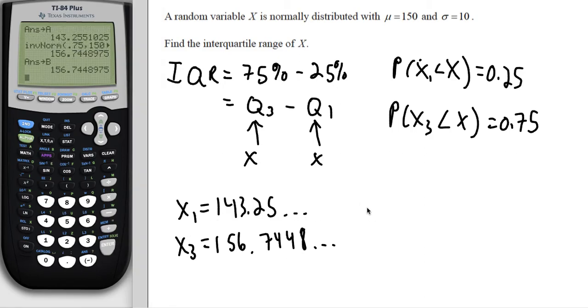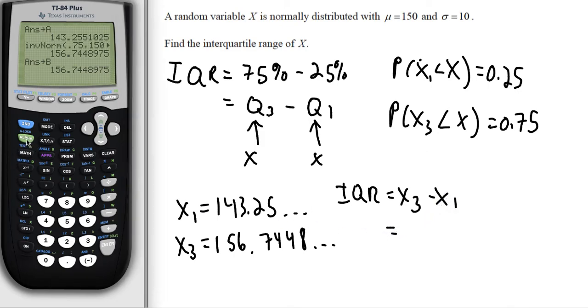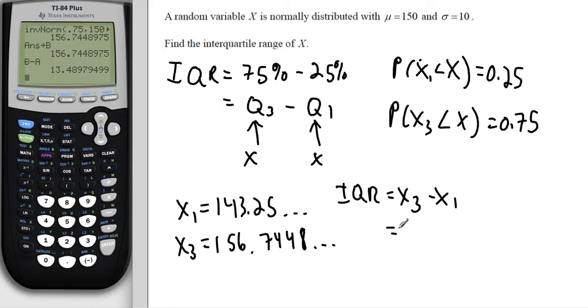So now the interquartile range, I just need to take x3 minus x1. So on the calculator, that's just going to be B minus A. And we get a value. Now we can round because this is our final answer. We can round to three significant figures. That'll be 13.5.